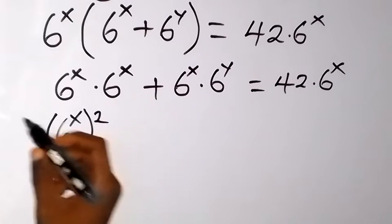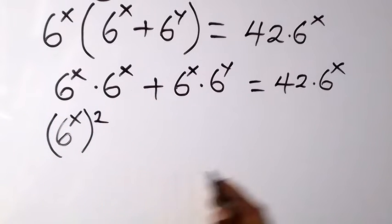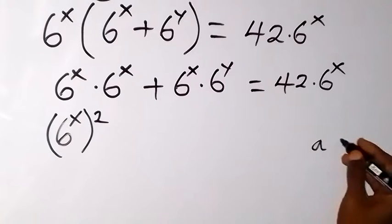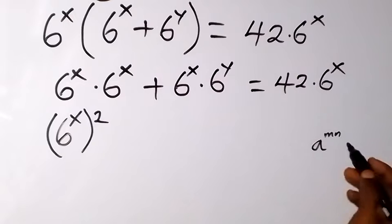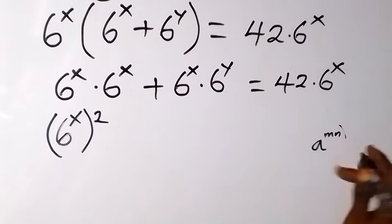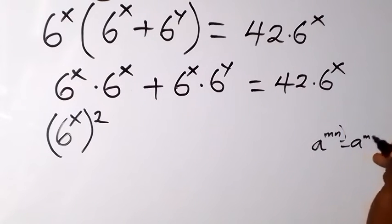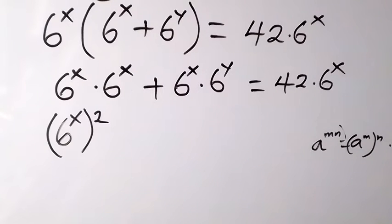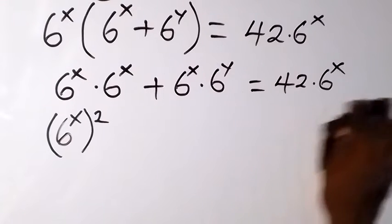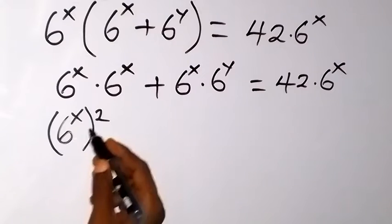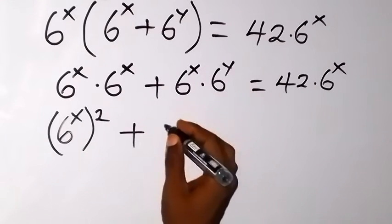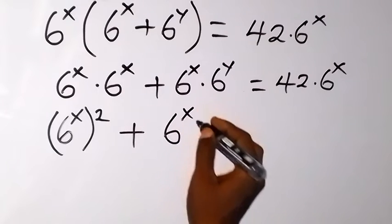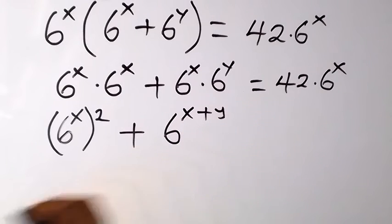Because this gives 2x. When we have a raised to the power m, then raised to the power n, we can write it as a raised to the power mn. So here, we have 6 raised to the power x, squared. For the second term, since we have the same base, the powers can be added, giving 6 raised to the power x plus y.